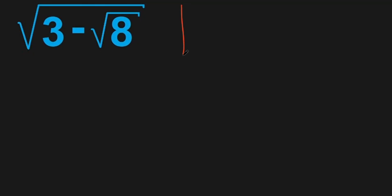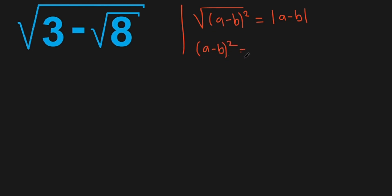The problem is square root of 3 minus square root of 8. Before we start simplifying, we need to know two formulas that we will need later. First: square root of (a minus b) squared equals absolute value of a minus b. Second: (a minus b) squared equals a squared minus 2ab plus b squared.